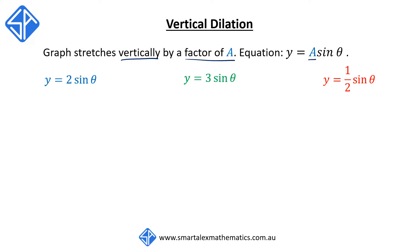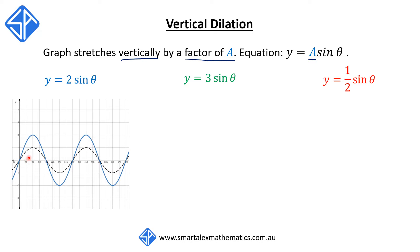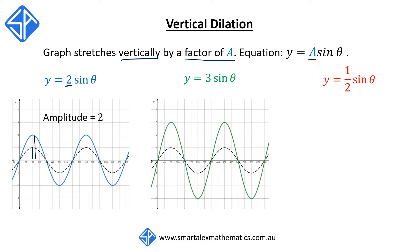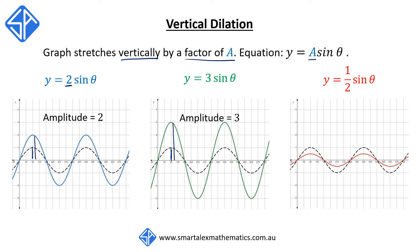Here are three examples. In the first graph, the black dotted line is the original function y equals sine theta. Because we've got a 2 in front of the original function, that essentially multiplies the y-coordinate of every single point by 2, changing the amplitude from 1 to 2. For y equals 3 sine theta, the amplitude changes from 1 to 3. For y equals half sine theta, the amplitude gets multiplied by half and reduces to one half.